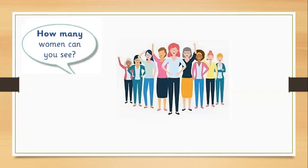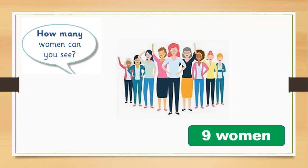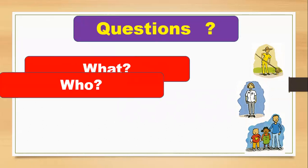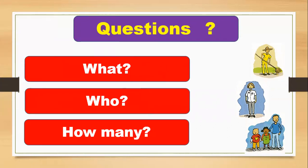Now, how do we ask about many people? Use 'how many.' For example: How many women can you see? Look at the picture and count the women — there are nine women. So remember: what, who, how many — learn these words and use them in your questions.